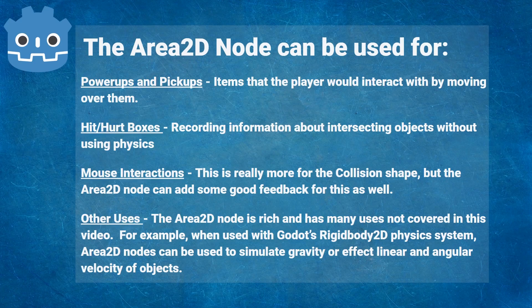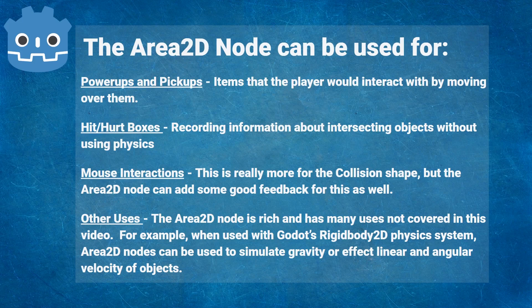Hello there, welcome. Today we're going to be talking about the Area 2D node and how it can be used in Godot. The Area 2D node is a commonly used tool in any designer's toolbox. The node can be used to detect when two objects are intersecting each other and send signals to a script on what should happen with this interaction.